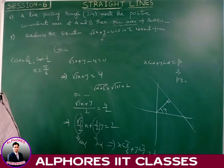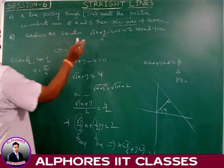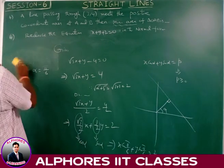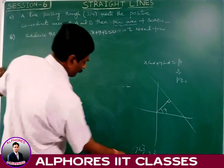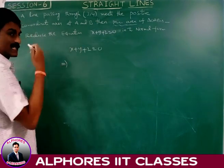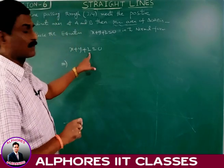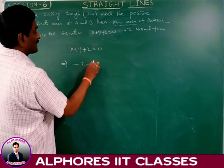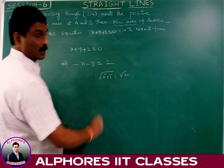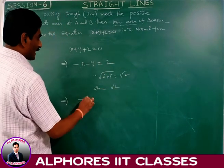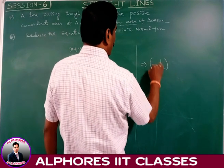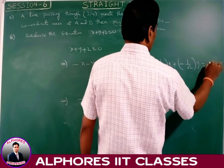Sixth problem: Reduce x plus y plus 2 equals 0 into normal form. P must be positive, so rearrange: minus x minus y equals 2. Divide by √(A² + B²) equals √(1+1) equals √2. This gives (−1/√2)x plus (−1/√2)y equals √2. So cos α equals −1/√2 and sin α equals −1/√2, both negative, meaning α lies in the third quadrant.